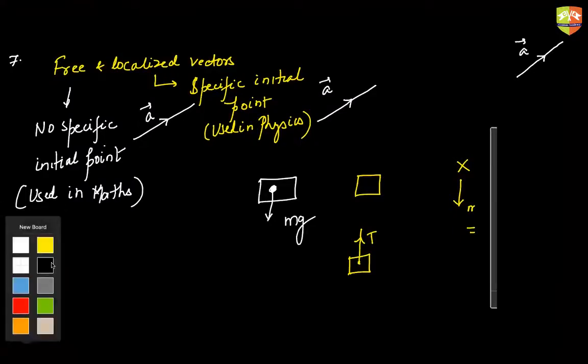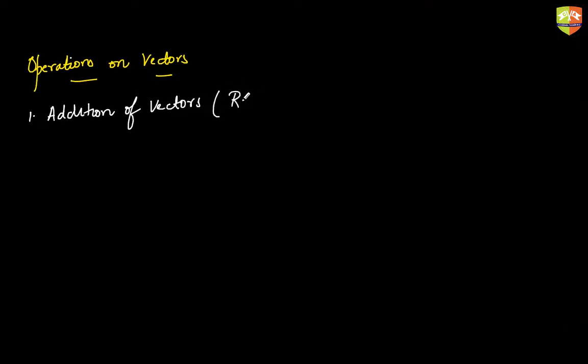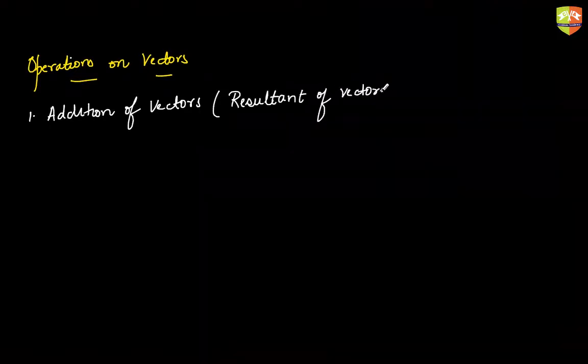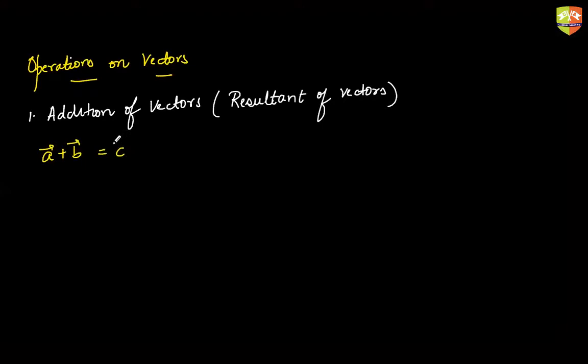Let's jump into operations on vectors, starting with addition. Addition of vectors is the same as finding the resultant of vectors. When you add two vectors A and B and get vector C from it, we call C the resultant of A and B.